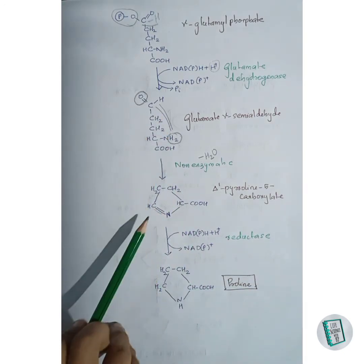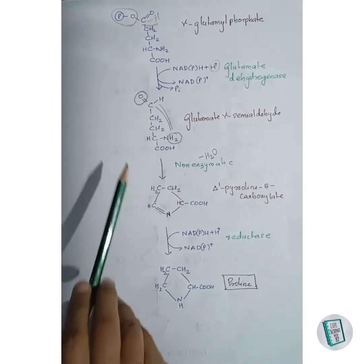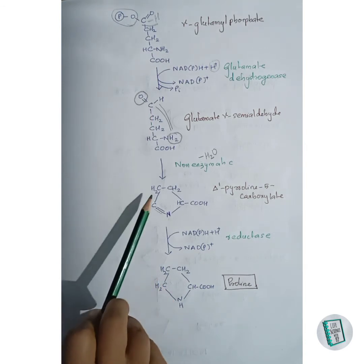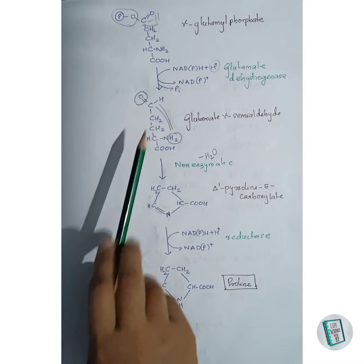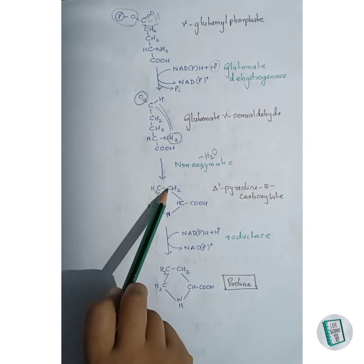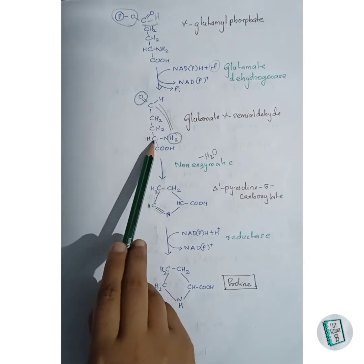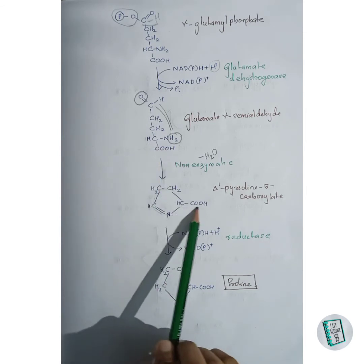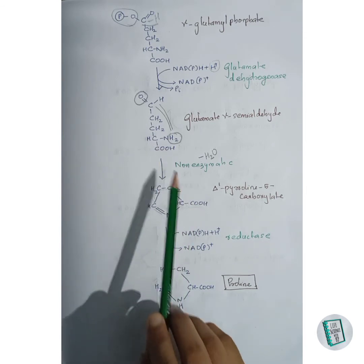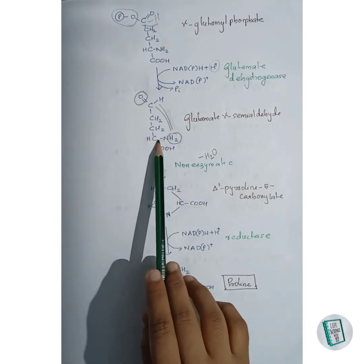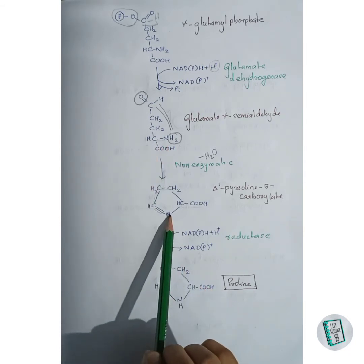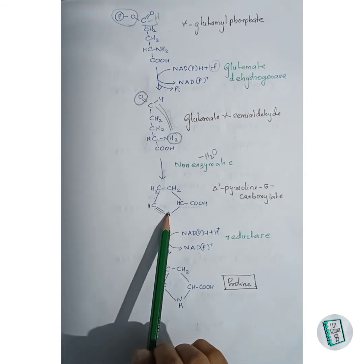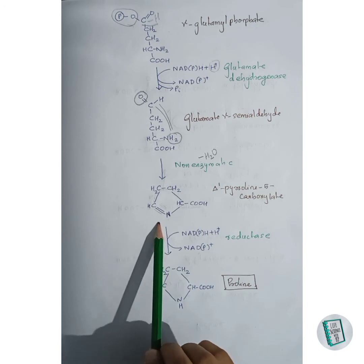The bonds within the structure are as follows: the CH₂–CH₂ bond and the CH₂–CH bond are present, along with the COH group and the carbon–nitrogen bond. This complete cyclic structure is delta-prime pyrroline-5-carboxylate.